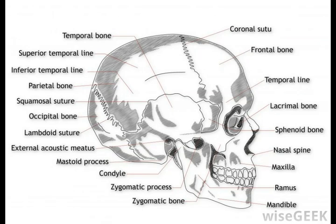It is this condyle that provides the attachment to the temporomandibular joint, or TMJ. This joint of the jaw is formed from two bones: the mandible itself, and the upper temporal bone. The latter is located at the base and sides of the skull, and supports the area between the eyes known as the temple. An articular disc, which is a thin and oval structure made up of fibrocartilage, helps to form the temporomandibular joint in its location between the mandible and the upper temporal bone.